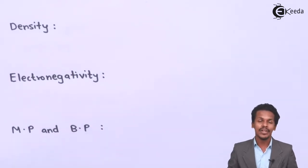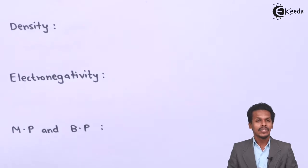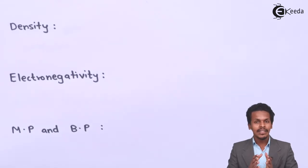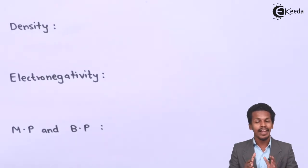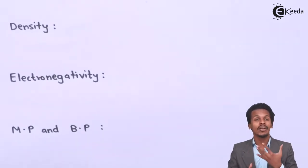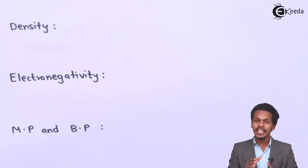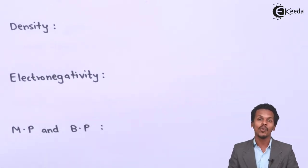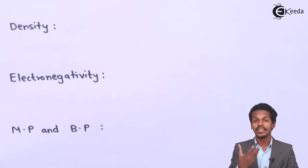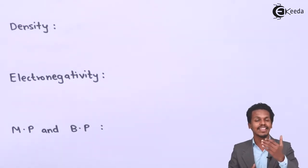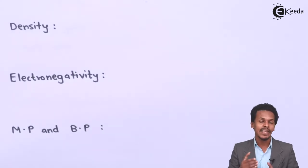The next point is electronegativity — it is the tendency to acquire electrons in a bonded molecule. Fluorine is the most electronegative element in the whole periodic table, and the second most electronegative element is oxygen. So in group 16, oxygen is the most electronegative, sulfur is less electronegative, and therefore electronegativity decreases down the group.